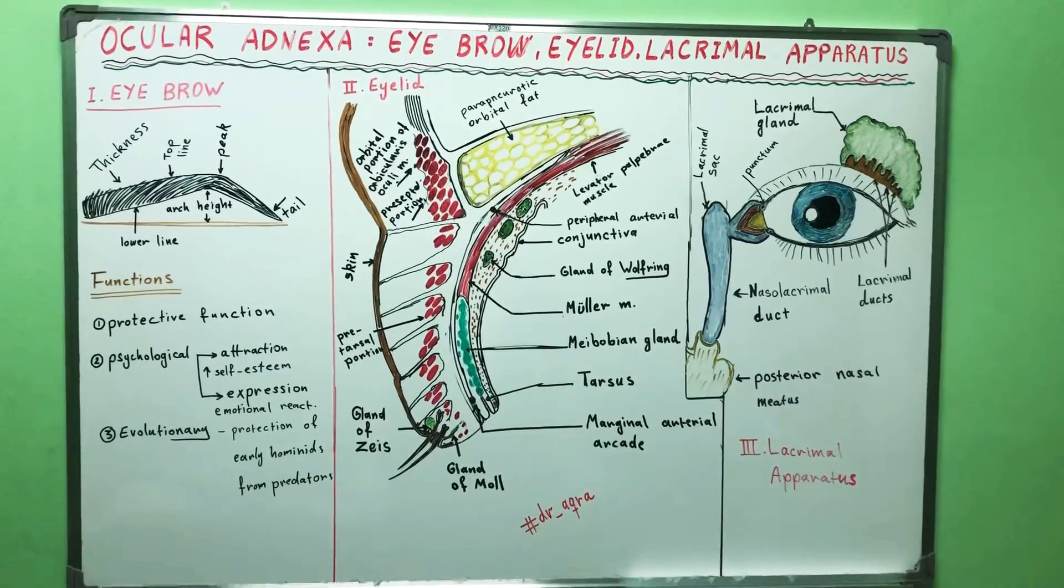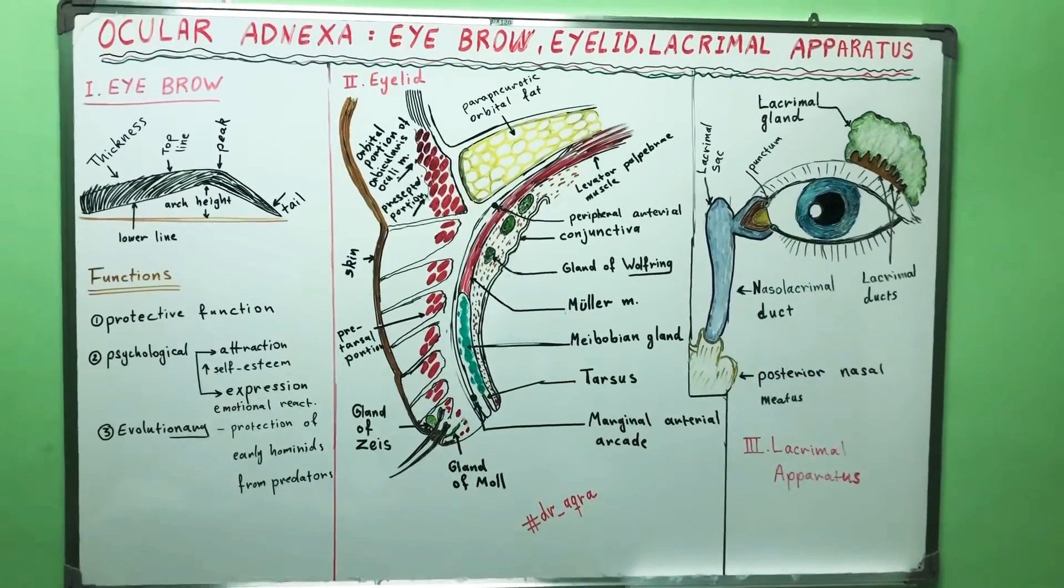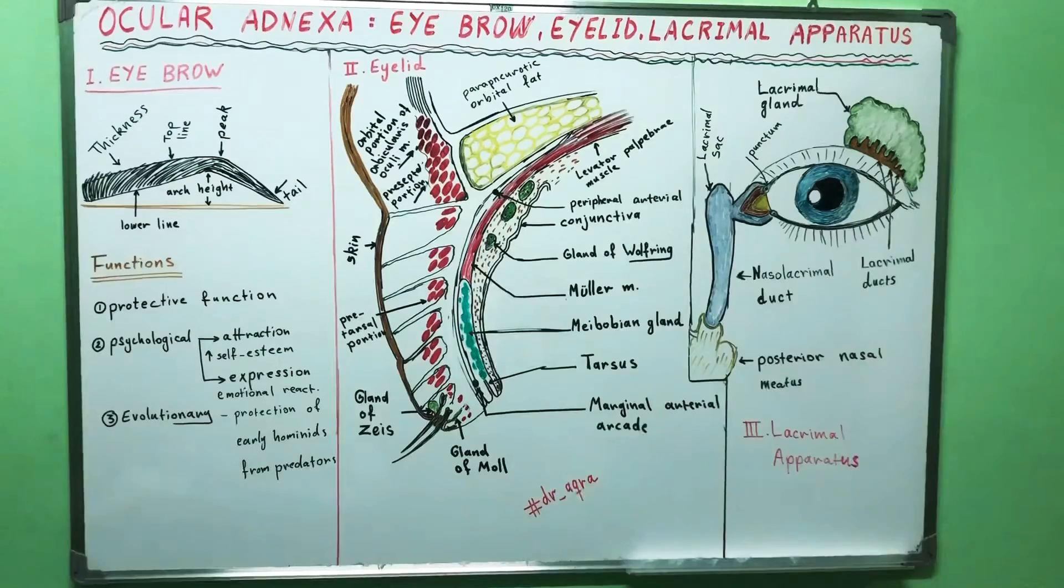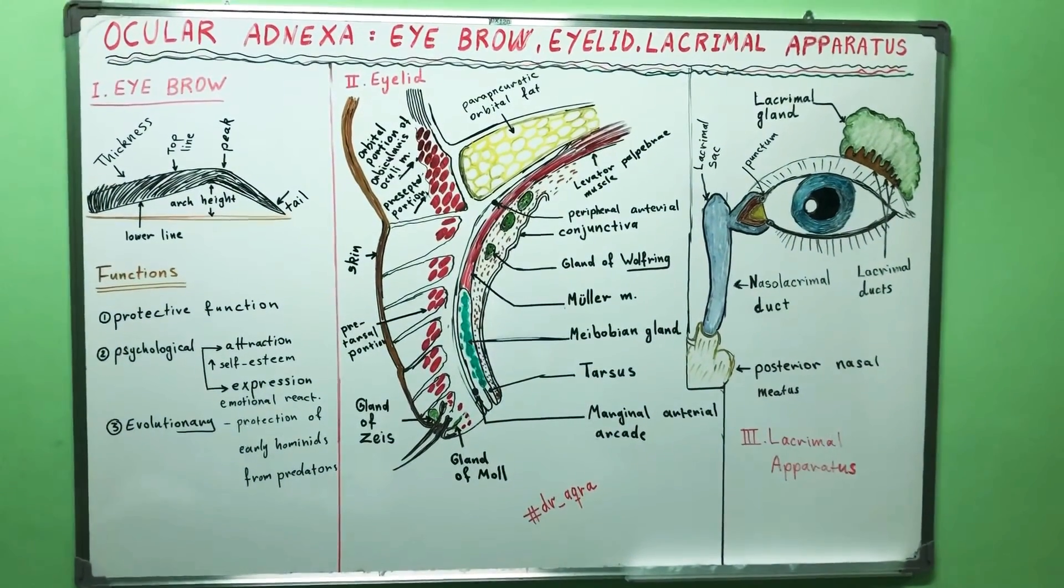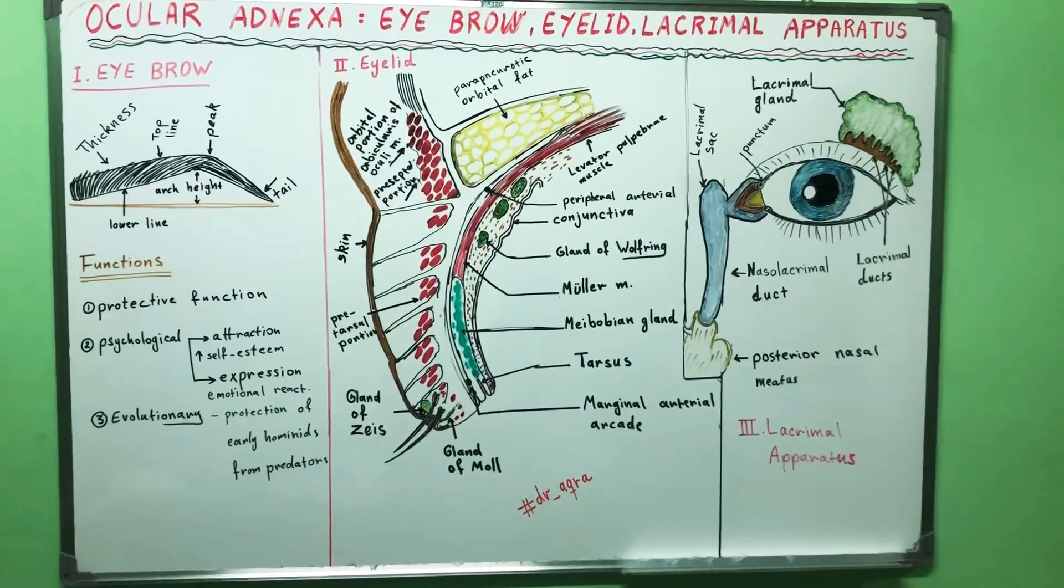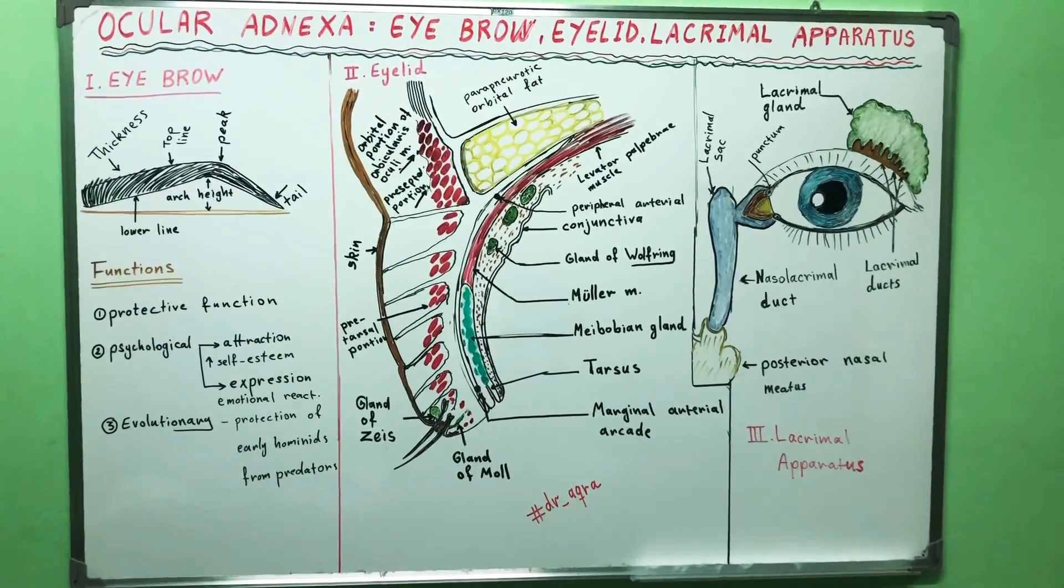This is about the major points related to ocular adnexa of the eye. In the next lecture, we will talk more about the physiology of the tears. Thank you for being good listeners.